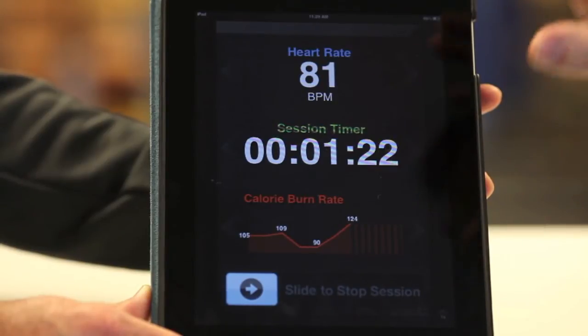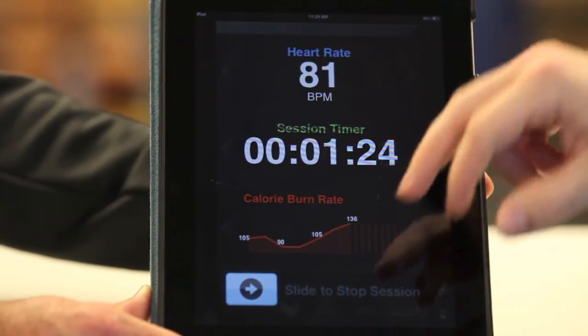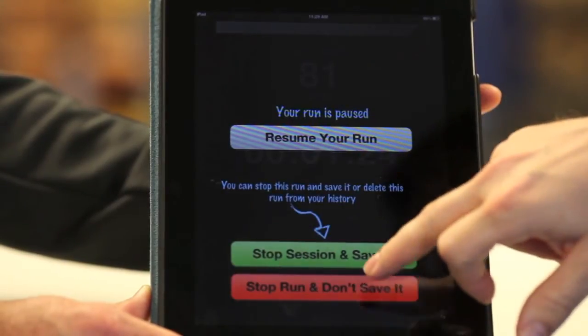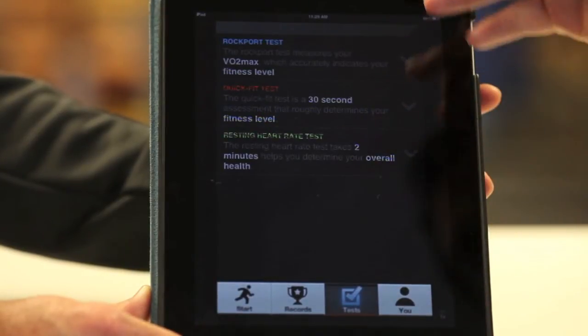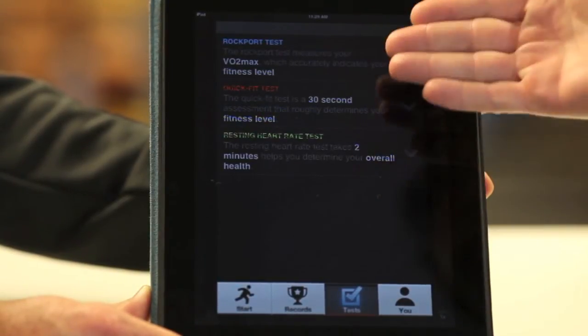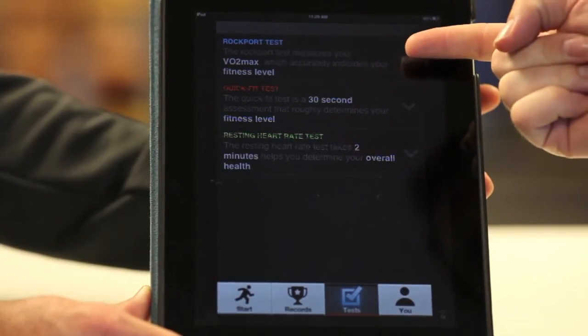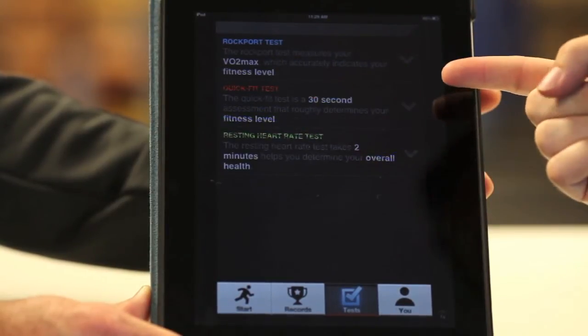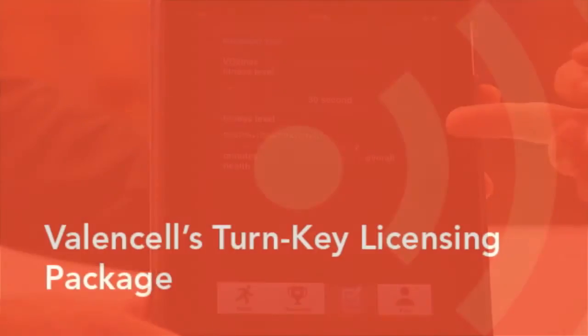You can also see the results of your workout. You can see some examples of your tests that you've done. We have some specialized tests here. For example, a VO2 max test. We have a quick fit test. We even have a resting heart rate test here.